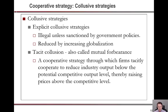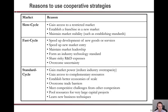Reasons for cooperative strategies: slow cycle reasons could be to gain access to a restricted market — something that's heavily regulated, in another country that's difficult to enter, or that requires some equity stake of a native firm. It's a way to easily franchise into a new market.